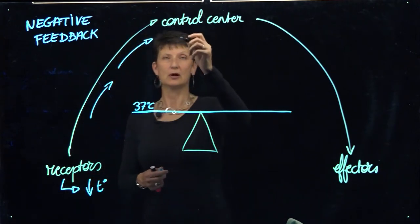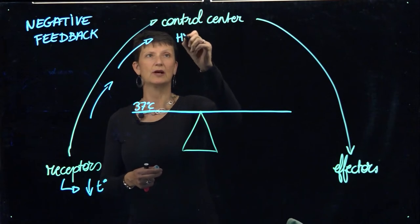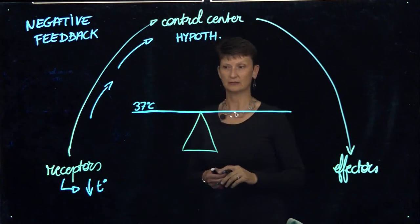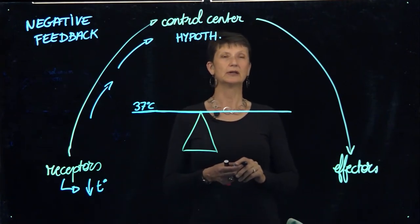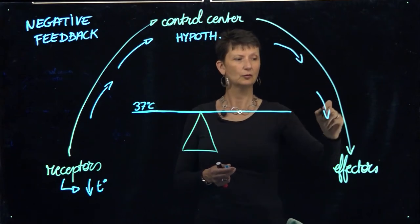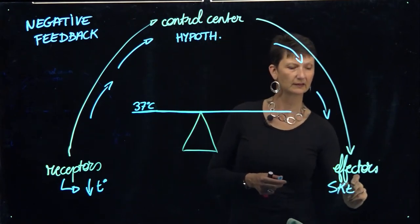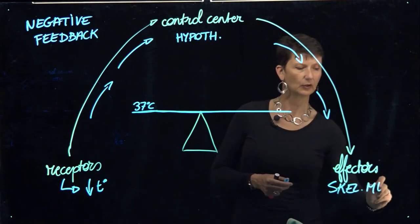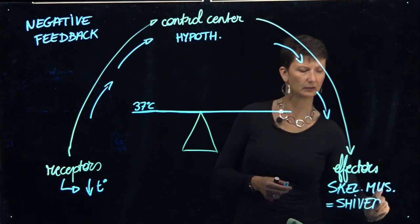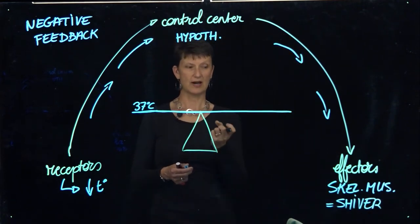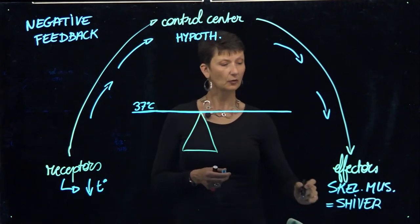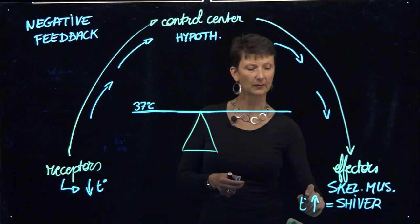Particularly, there's a part of the brain called the hypothalamus — or for now, just remembering it's the brain is good enough. The hypothalamus will then send electrical signals to our skeletal muscles to start contracting very rapidly, and we call that shivering. When we shiver and our muscles contract very rapidly, we produce heat, and so slowly but surely our body temperature comes back up.